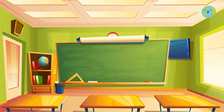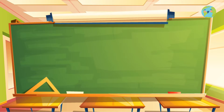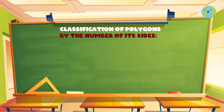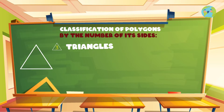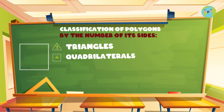We can classify polygons in three basic ways. We can classify polygons by the number of their sides. The three-sided polygons are called triangles, and those with four sides are quadrilaterals.